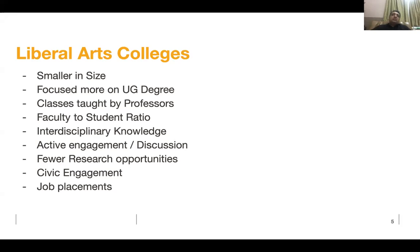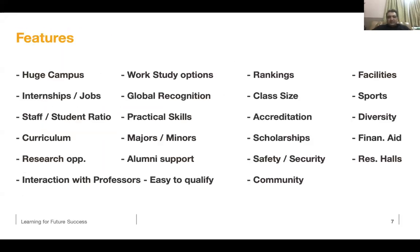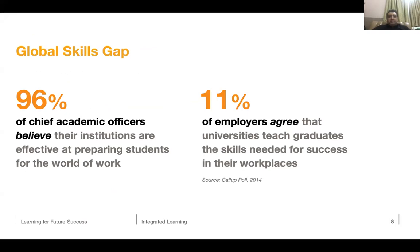Let's speak about the global skill gap. Irrespective of which university you speak to, administrators will always say they produce top quality graduates. In fact, 96% of chief academic officers believe their institutions are effective at preparing students for the world of work — whereas only 11% of employers actually agree with that.